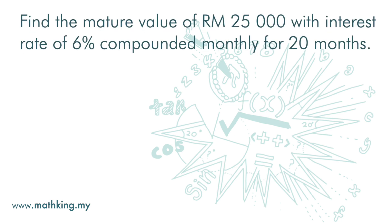Find the matured value of RM25,000 with an interest rate of 6%, compounded monthly for 20 months. The matured value is principal times 1 plus interest rate to the power of time period.